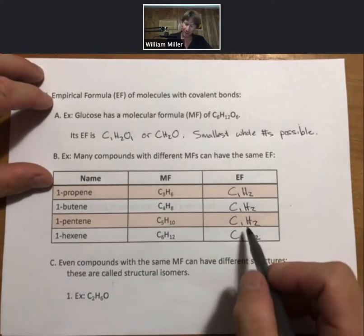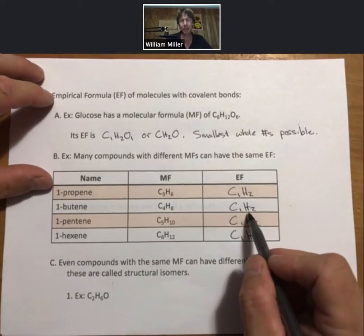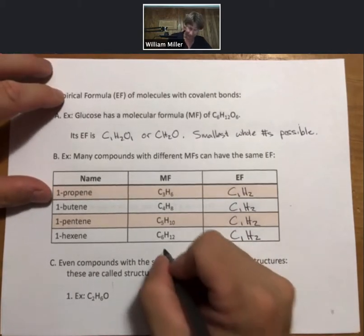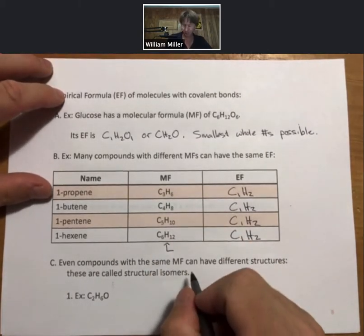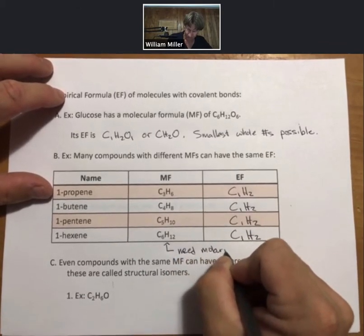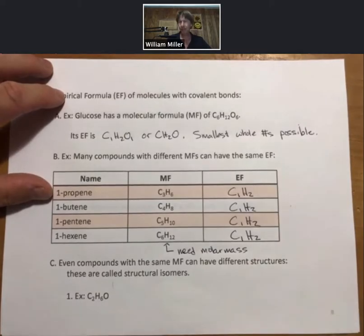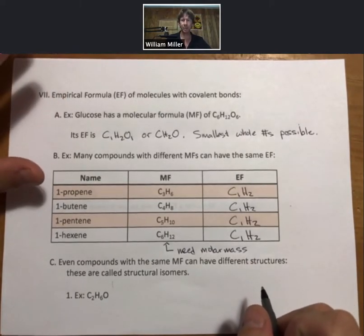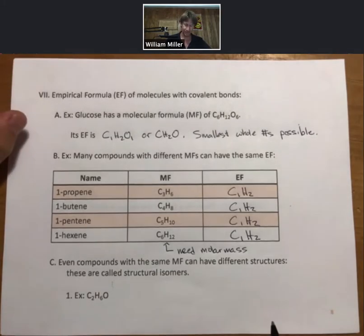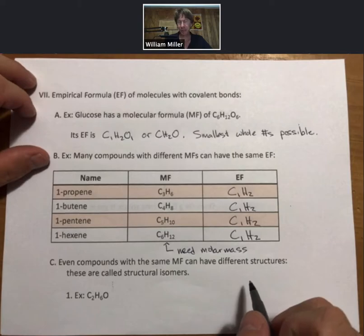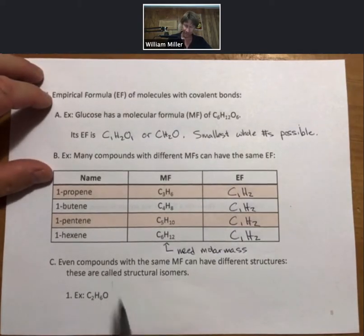What allows you to differentiate an empirical formula from a molecular formula is the molar mass. So oftentimes we'll need the molar mass to differentiate the two or to figure out what is the molecular formula when there are many possible ones. Things get more complicated as we peel back the layers of chemistry.